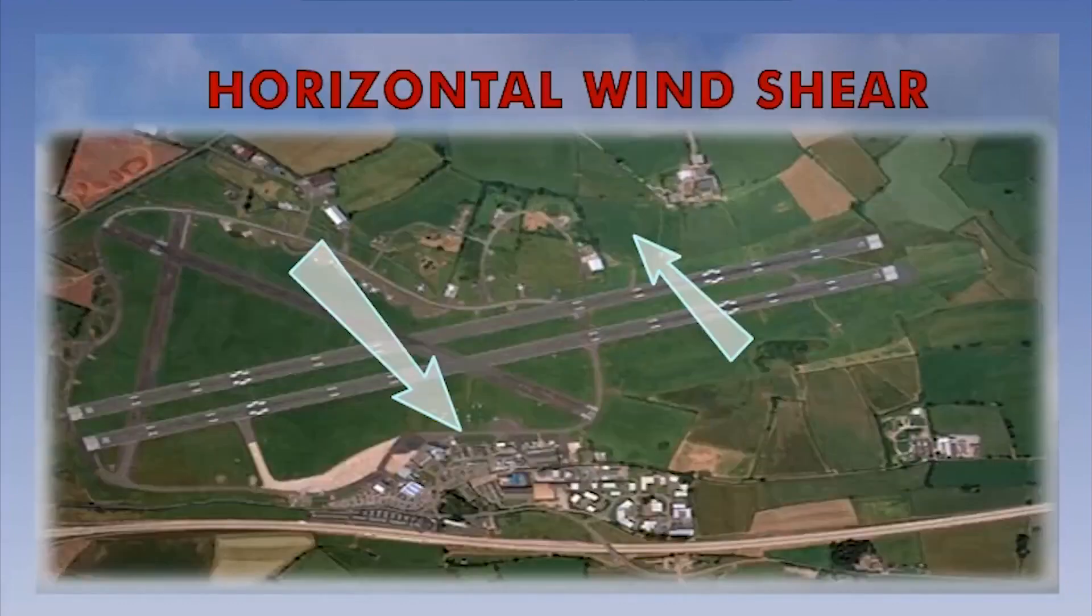Horizontal windshear is the change in the wind speed and direction with horizontal distance. Again, the diagram shows this using a runway to illustrate the situation. The direction and speed at one end of the runway is very different to that at the other end of the runway.